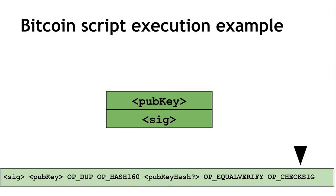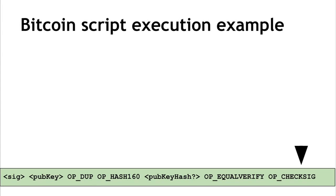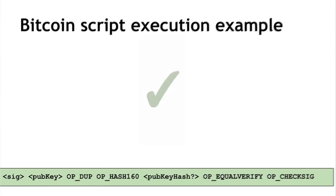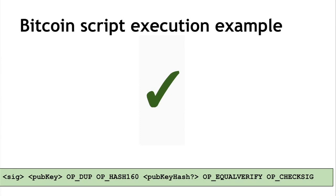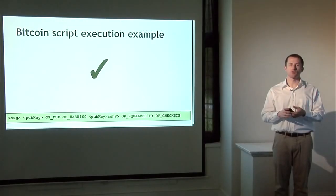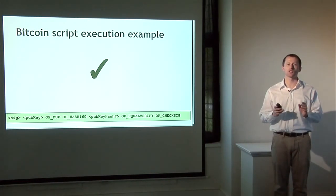We've confirmed the public key was the correct one specified by the sender. Now we check that the signature is actually valid using OP_CHECKSIG — one instruction that verifies a signature. In Bitcoin, the only thing you can sign is an entire transaction, so CHECKSIG verifies that the entire transaction was signed. If successful, it pops the remaining two items off the stack. With every instruction executed and no errors, the script outputs a simple 'yes' — the transaction is valid. Every Bitcoin script produces one of two outcomes: successful execution means valid transaction; any error means the transaction is invalid and rejected from the blockchain.